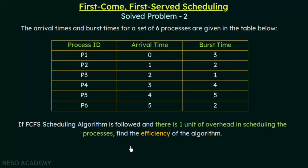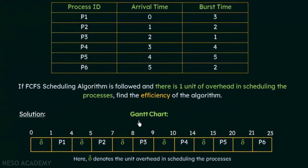Whenever a process arrives, the system will have one unit delay in assigning the CPU. And even when the CPU is switched between processes, there will be one unit of time delay in switching between the two processes. That is what we mean by one unit of overhead in scheduling the processes. So, we have to find the efficiency for this particular set of processes with these arrival and burst times. To do that, we are going to draw the Gantt chart.